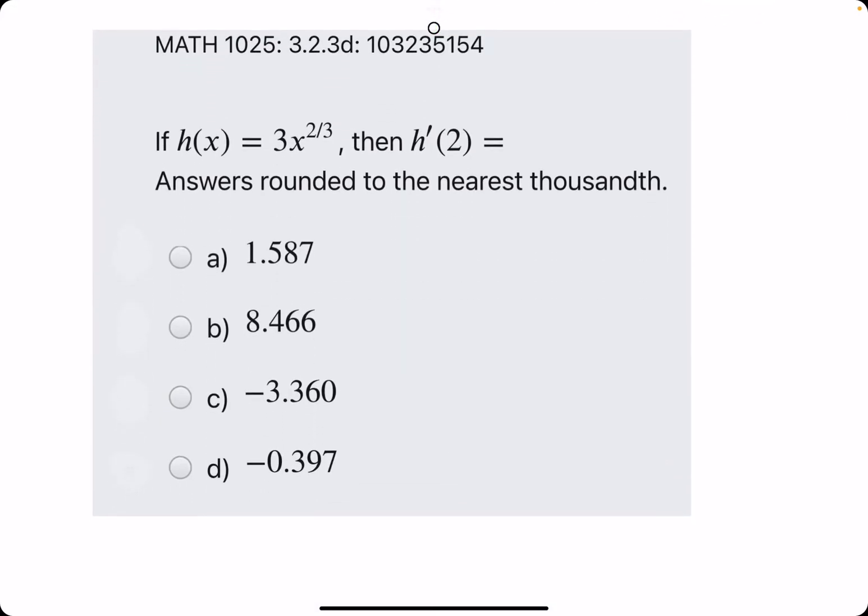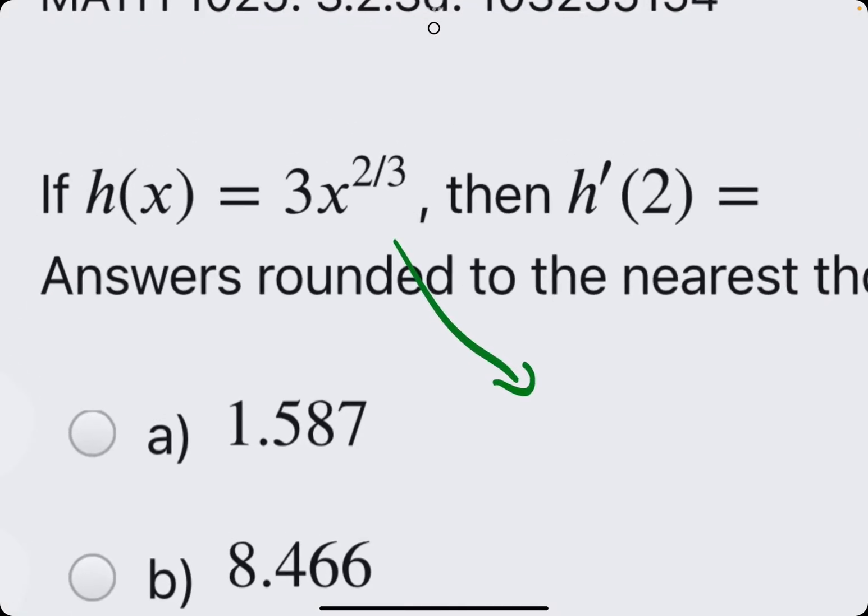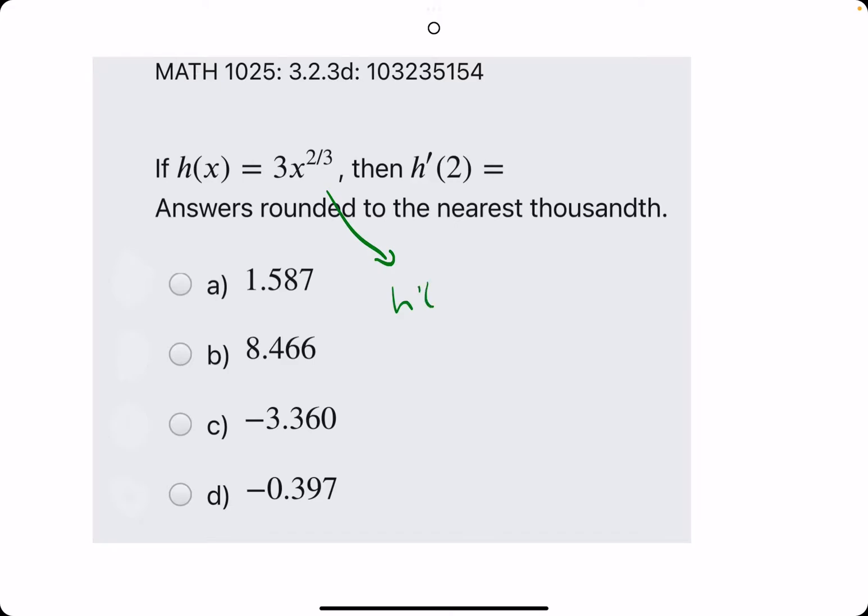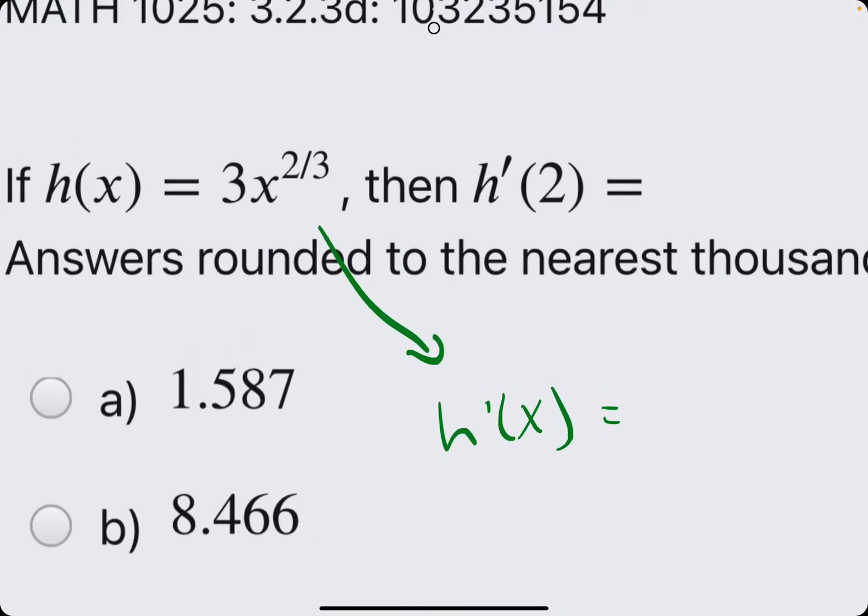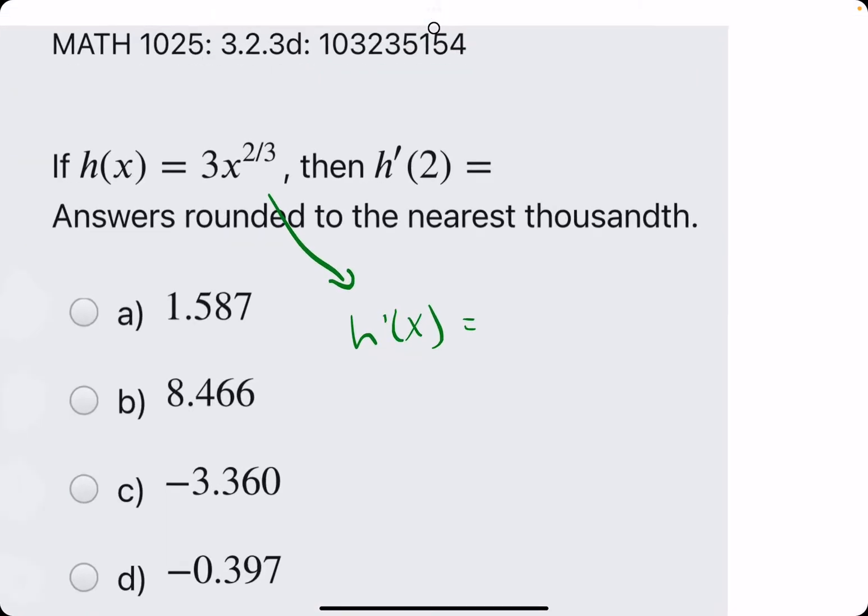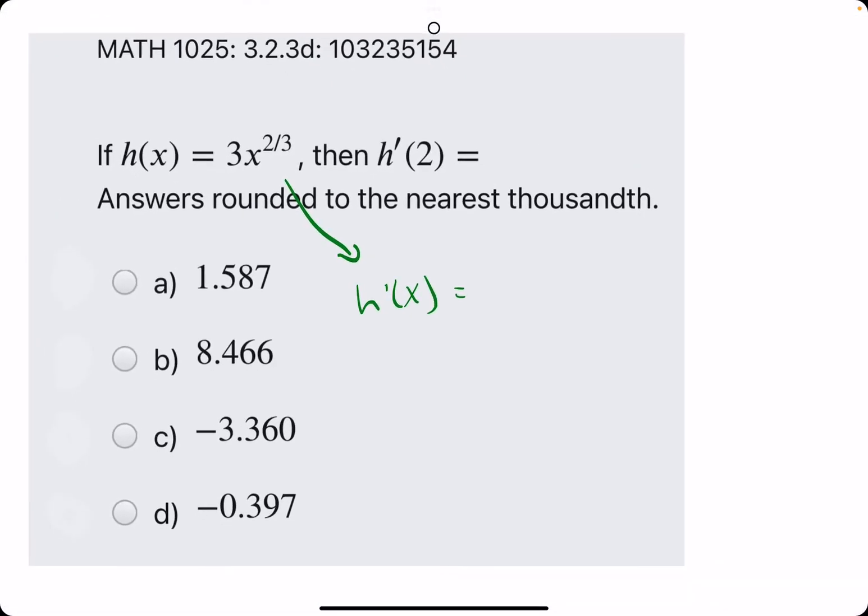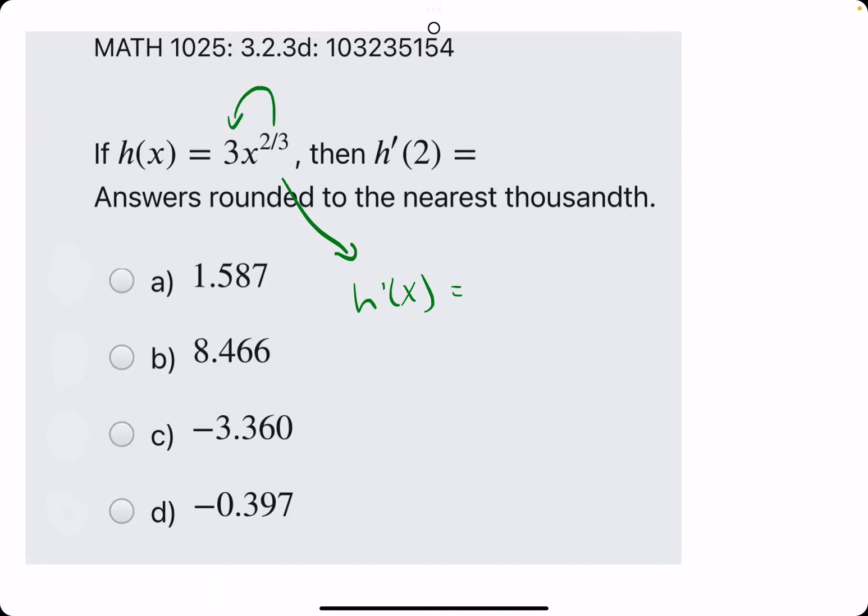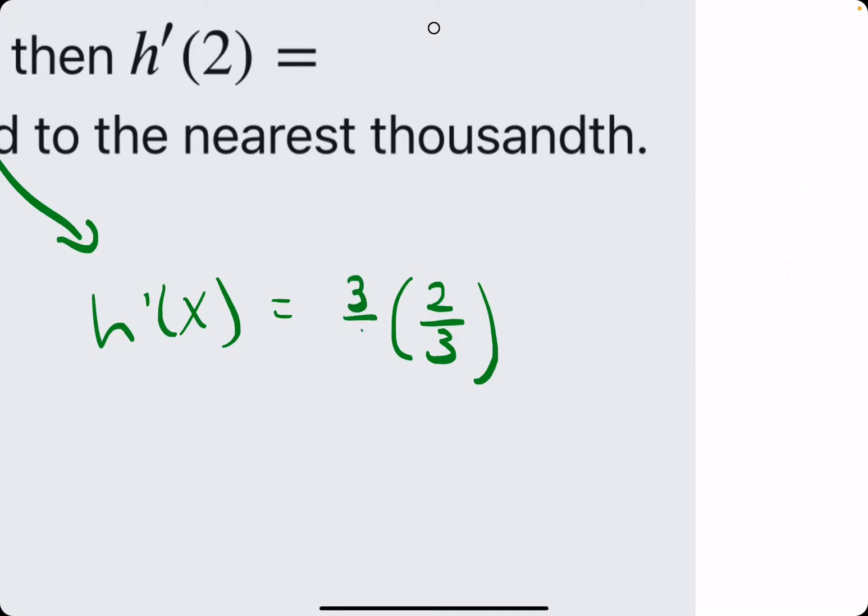So with this one, it's already in the form that we can start finding the derivative because there's no roots and there's no x terms in the denominator to bring up with negative exponents. So we would just simply bring out the 2/3 and multiply it by 3. So 3 times 2/3, the way I see it, 3 is 3/1. And so we have a 3 on top, 3 on the bottom, they cancel.